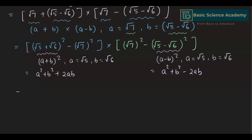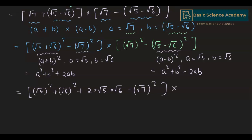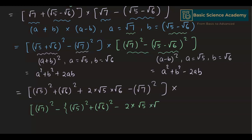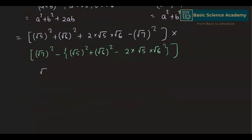Using these formulas gives us: (√5)² + (√6)² + 2·√5·√6 minus (√7)², all multiplied by (√7)² minus [(√5)² + (√6)² - 2·√5·√6].